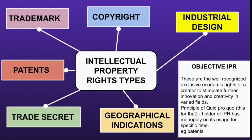As we discussed, intellectual property rights could be of six types: trademark, copyright, industrial design, patents, trade secret, and geographical indications.